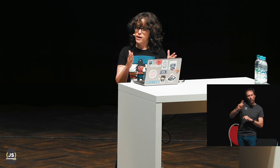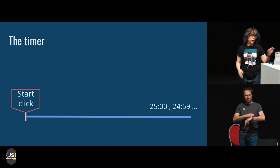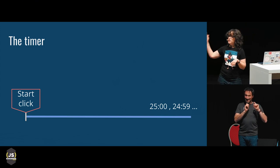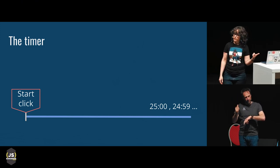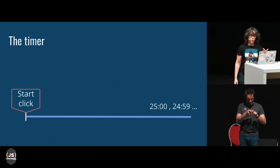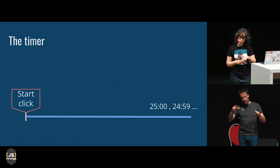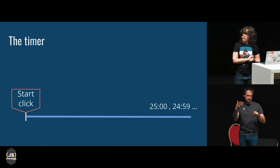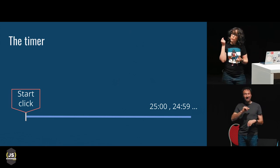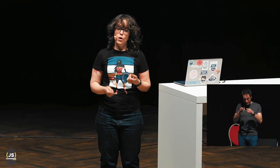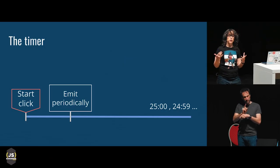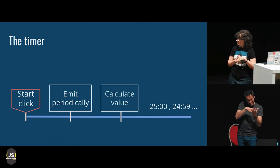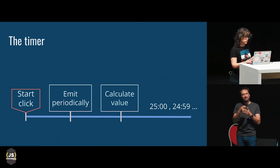Let's practice this thinking by analyzing our timer stream. The input is the start click and the output is that timer display counting down. So the first stream is going to emit mouse events like we saw, and the last stream is going to emit strings of timer display values. The two main characteristics of the stream are getting transformed here — I'm going from a stream that emits on the click to a stream that emits every second, and I want to calculate how much time I have left on my timer.